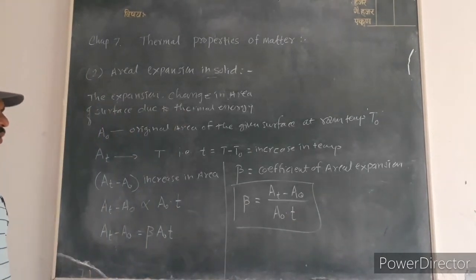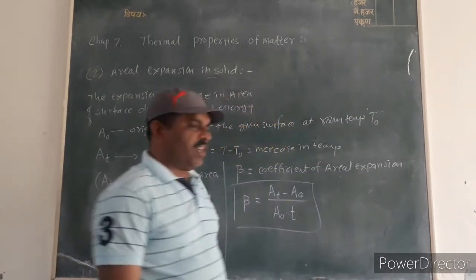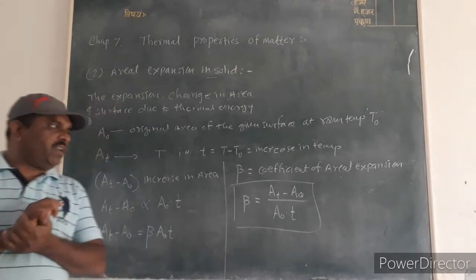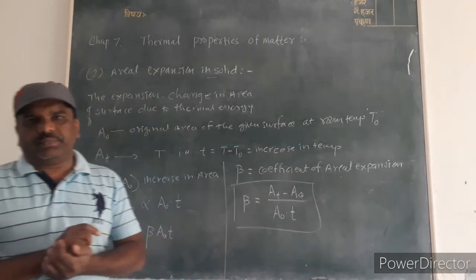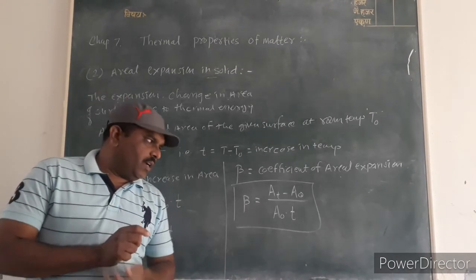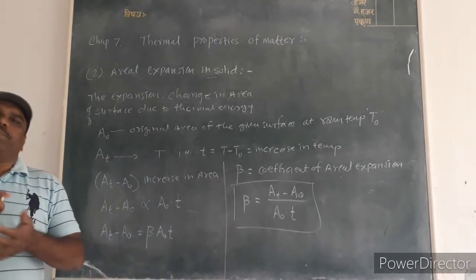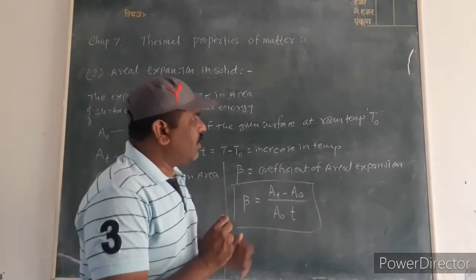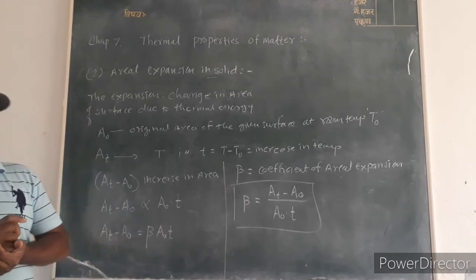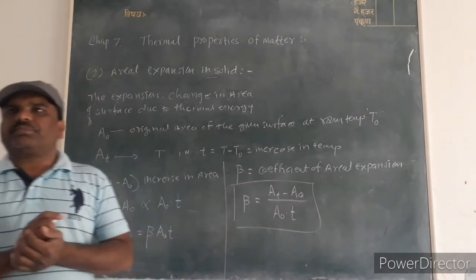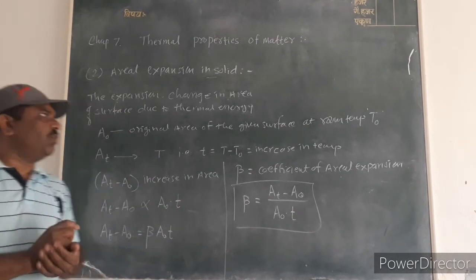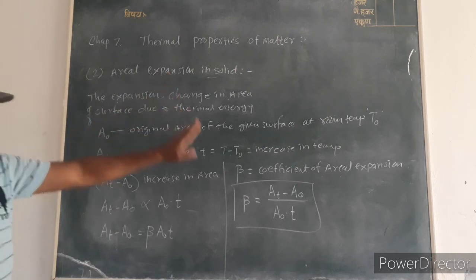Hence we define the coefficient of area expansion in solids. It is defined as the increase in area per unit original area and rise in temperature. It can also be defined as the ratio of the increase in area to the original area and rise in temperature.